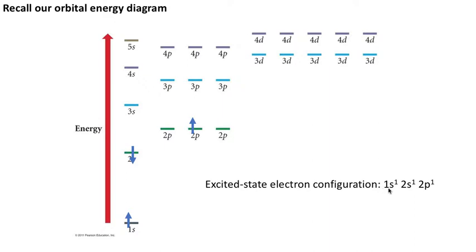In the 1s orbital, there's one electron. There it is. In the 2s orbital, there's also an electron. It's spun down.